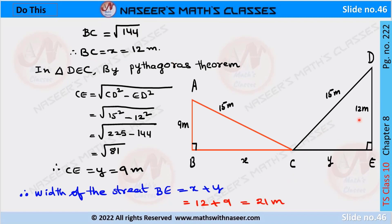In triangle DEC, by Pythagoras theorem, CE equals the square root of CD square minus DE square. CD is 15 and DE is 12, so we get root of 225 minus 144, which equals root 81, written as 9 squared.